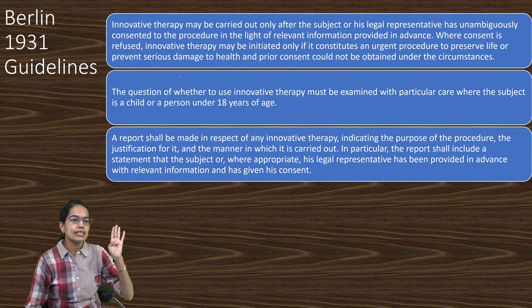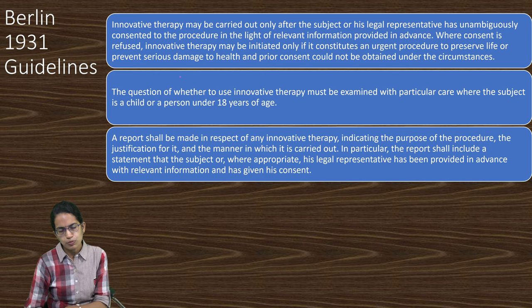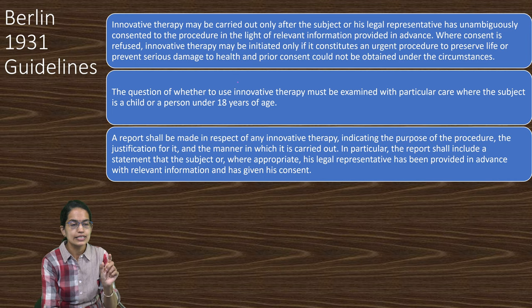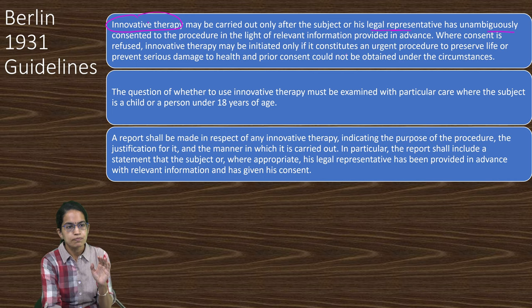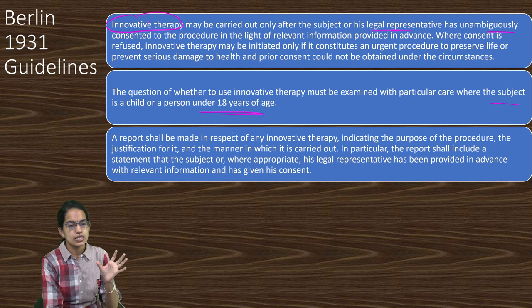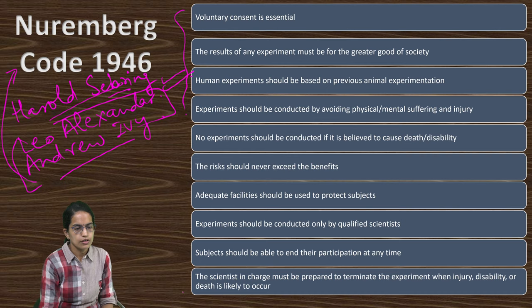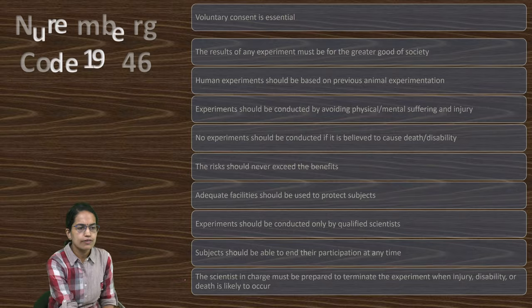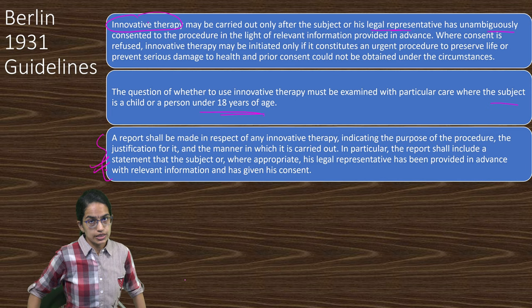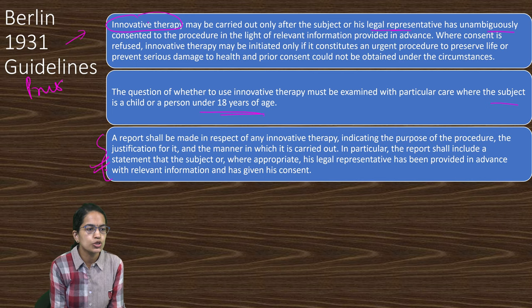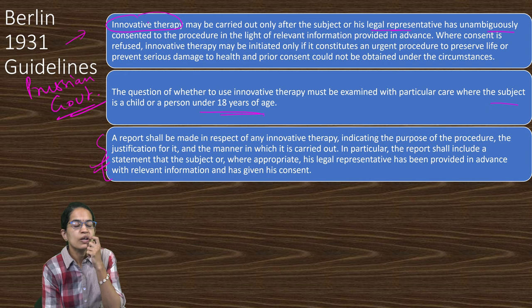Before the 1946 code, in 1931 there were certain guidelines given which were much older and much briefer. They did not talk about voluntary consent but stated that innovative therapy could be carried out only with the legal representative having unambiguously consented to accept the procedure. This applied only to persons above 18 years of age, and a proper report and justification had to be made. Points like the 9th and 10th of the 1946 code were not part of the 1931 guidelines. These Berlin guidelines were laid down by the Prussian government and were just a starting point for ethical standards.